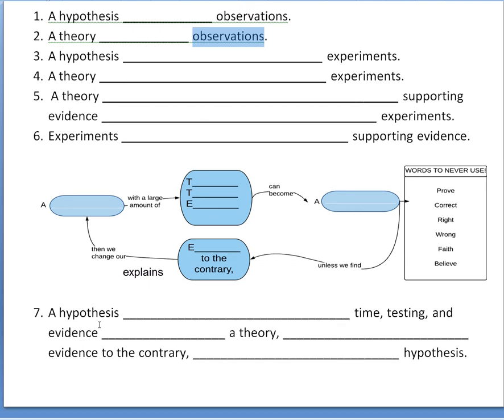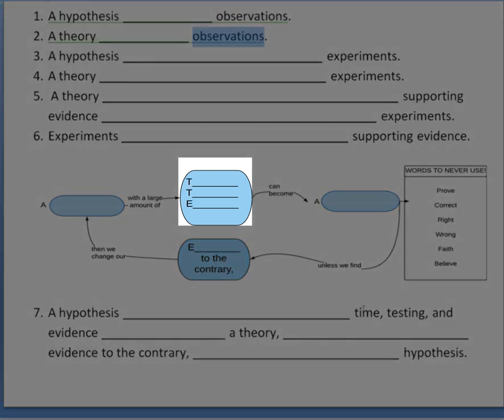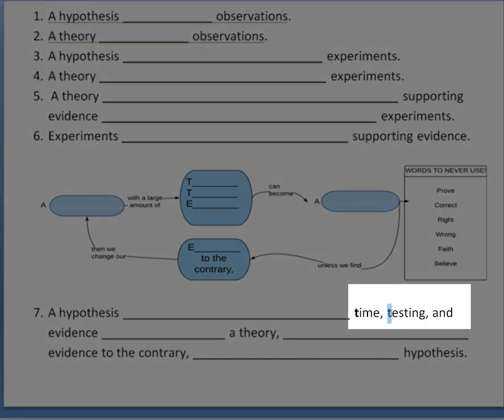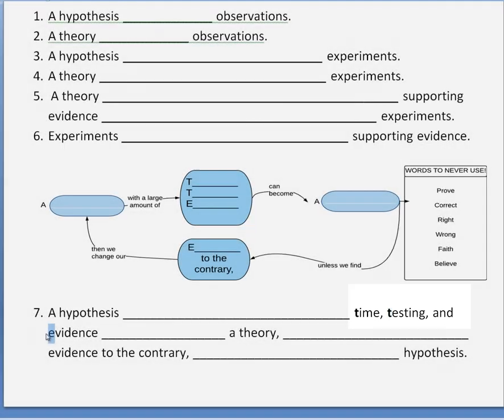These first six sentences go with this diagram, and then same thing down here, you'll notice the words on the arrows will be going in your blanks, the words in the sentence will be going in the bubbles. Notice you have T, T, E, that's for this T, this T, and that E.